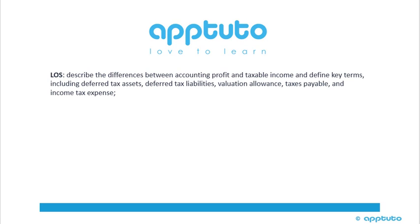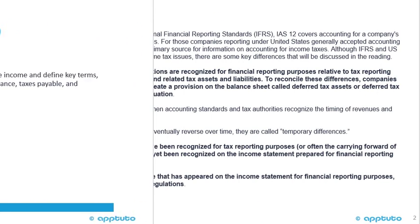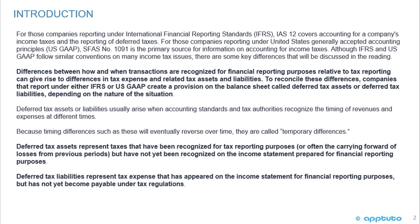This LOS is to describe the differences between accounting profit and taxable income, and define key terms including deferred tax assets, deferred tax liabilities, valuation allowance, taxes payable, and income tax expense. We'll start with an introduction to this LOS.